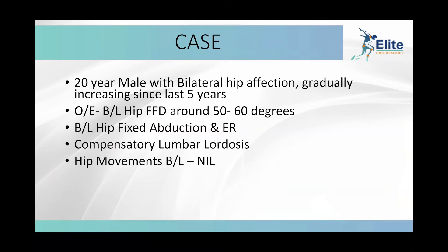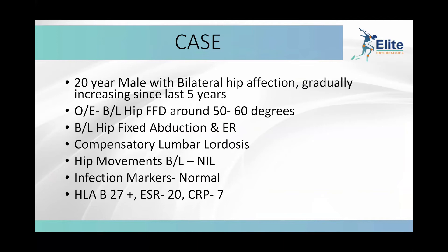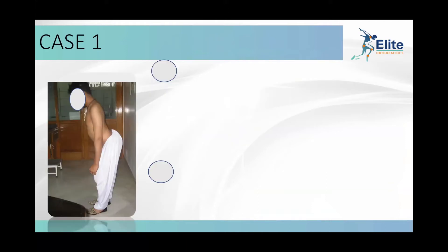There is a compensatory lumbar lordosis. The movements at the hip joint are nil. Infection markers are normal. HLA-B27 flow cytometry is positive. ESR of 20, CRP 27 — almost all inflammation markers are very, very low.